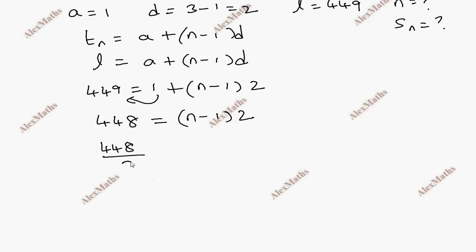448 divided by 2 equals n minus 1, and that is 224 equals n minus 1, then n equals 225.